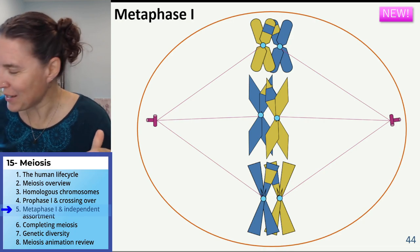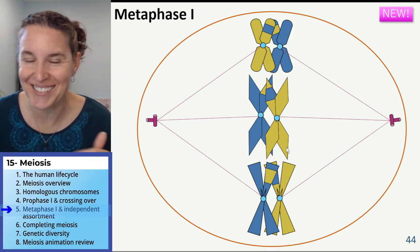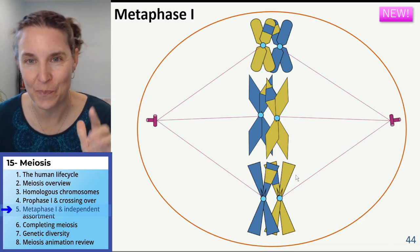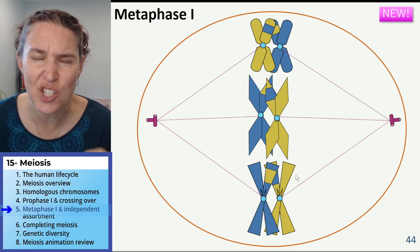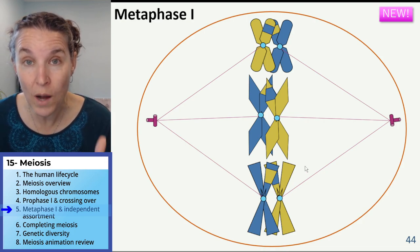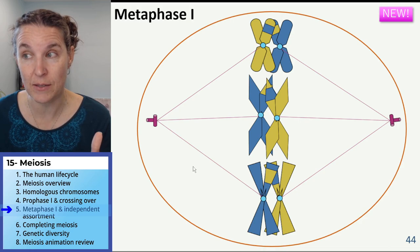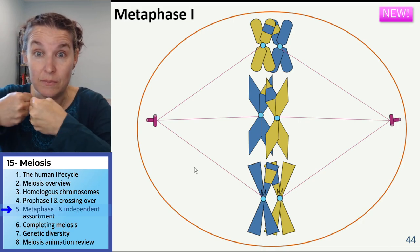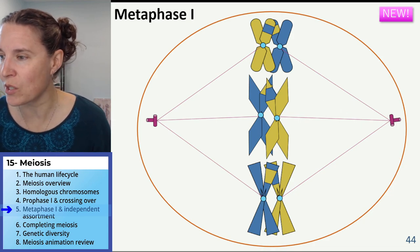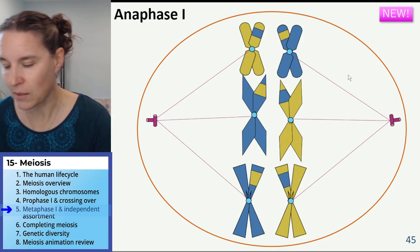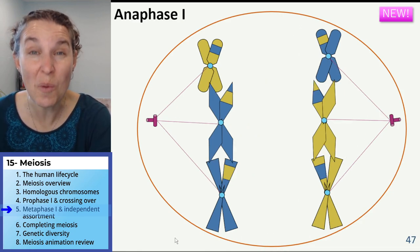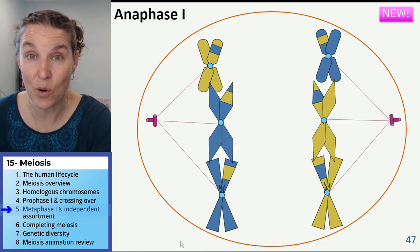Can you predict what's going to happen in anaphase one? I guarantee you can. What's going to happen in anaphase one of meiosis? Homologues are going to split. I'm just going to show it to you — it took one slide to show you that our homologues are going to split and go to the poles.